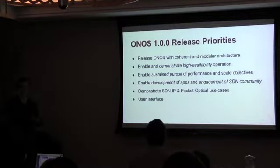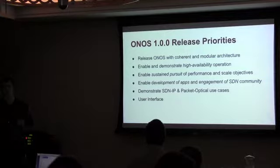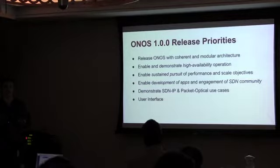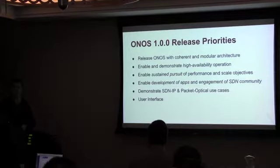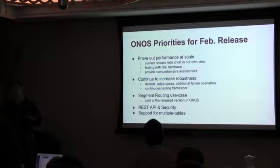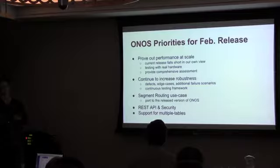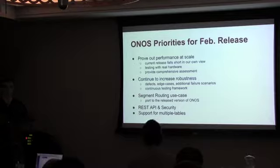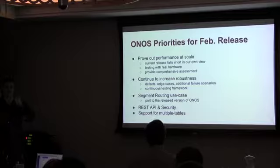It's difficult to demonstrate a product without a user interface, so while we don't have an elaborate UI, we have one that gives a picture of what the network looks like and the traffic on it. For February release priorities, we want to prove our performance at scale — we fell short in our own view on that. There was a deliberate choice: we followed the 'make it work, make it right, make it fast' progression, and February will focus on making it fast.